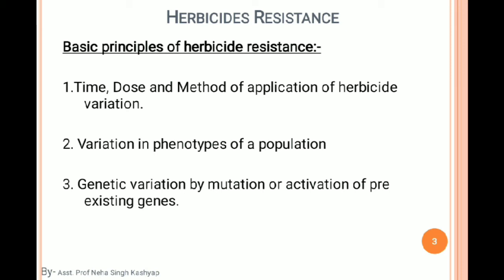Whether it is a crop variety or any wheat species with different populations, when mutation occurs they become more habitual to bearing that stress. This is also a main factor in the development of herbicide resistance. These three are the very important basic principles — also called basic concepts — of herbicide resistance.